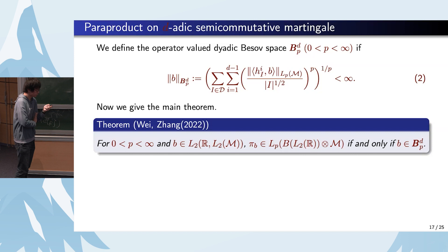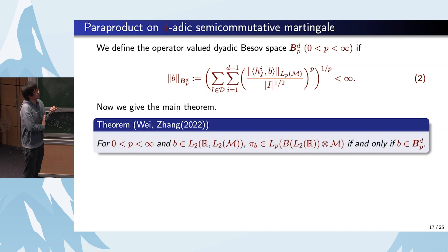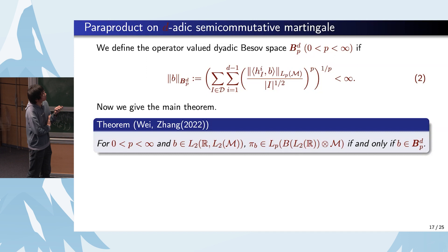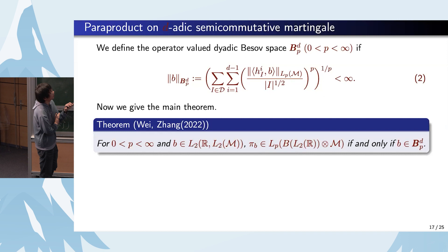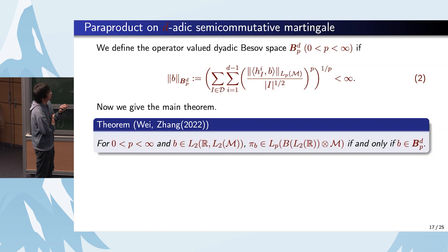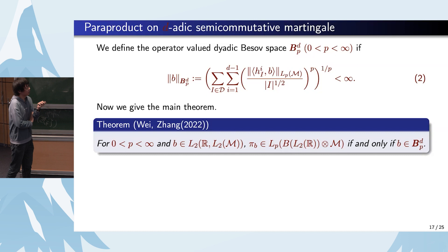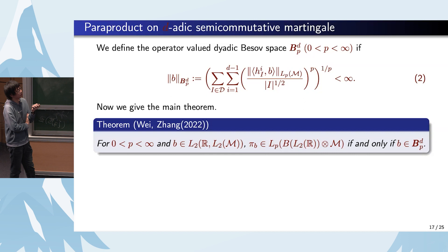Finally, we describe the Schatten properties of the paraproduct on the d-adic semi-commutative martingale using the associated Besov space: for B in L²(R, L²(M)), pi_B is in S^p(B(L²(R) tensor M)) if and only if B is in BP_d. This theorem describes the Schatten properties of the paraproduct on the generalized d-adic semi-commutative martingale.